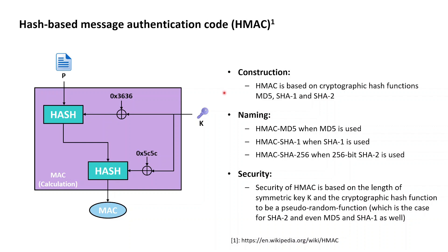If an HMAC makes use of MD5, then this construction is referred to as HMAC-MD5. If an HMAC makes use of SHA-1, then this construction is referred to as HMAC-SHA-1. HMAC-SHA-256 is the naming convention when SHA-2 is used, indicating that HMACs were devised with primarily having SHA-2 as an underlying hash function in mind.